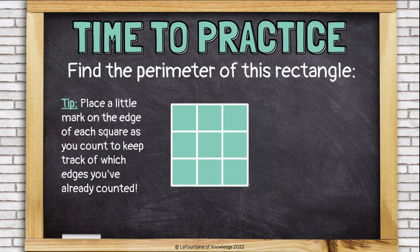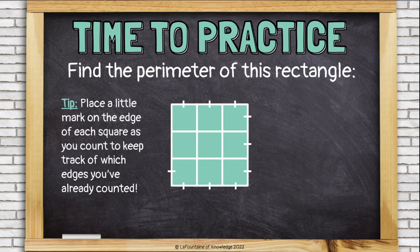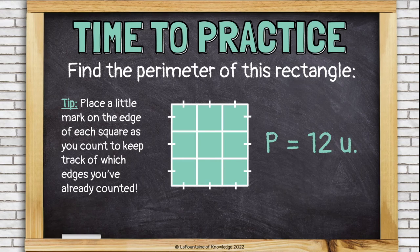Now let's practice one more with perimeter. My tip for perimeter is to place a little mark on the edge of each square as you count it to keep track. 1, 2, 3, 4, 5, 6, 7, 8, 9, 10, 11, 12. This rectangle has a perimeter of 12 units. Remember, perimeter is the distance around the outside edge of the shape, so here we were counting the edges of the squares that touched the edge of the rectangle.